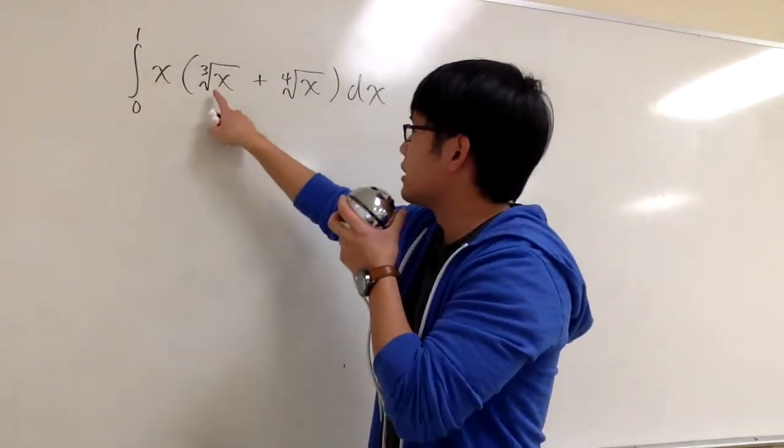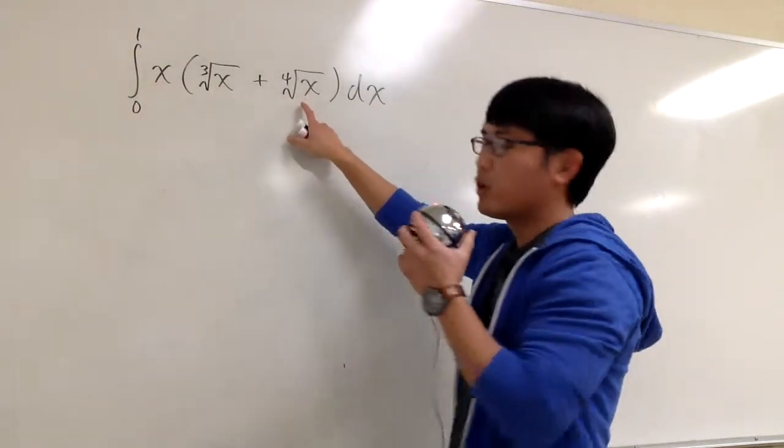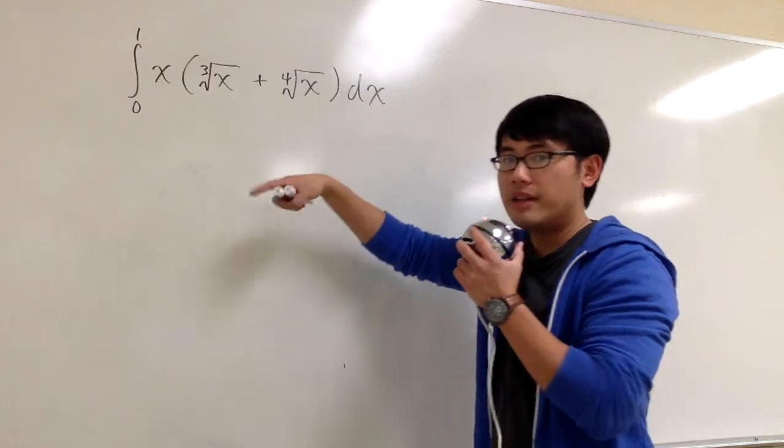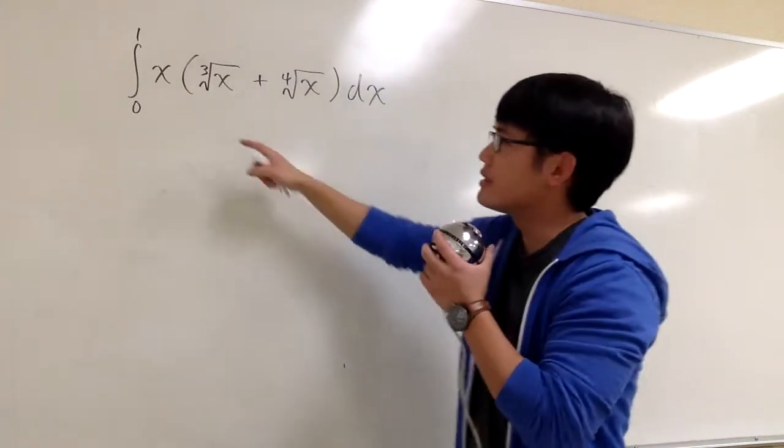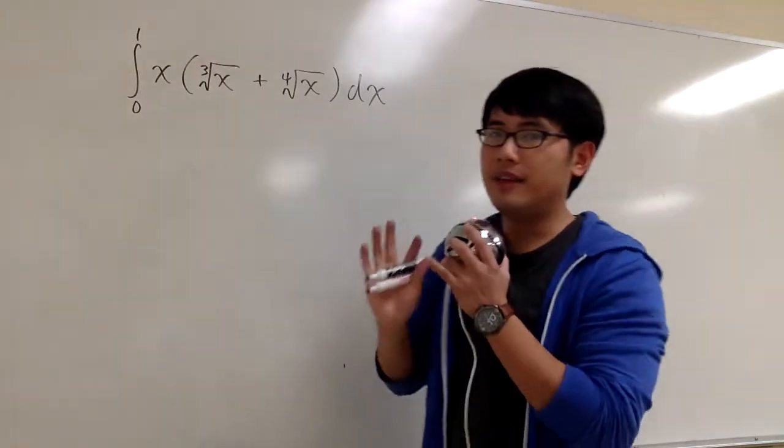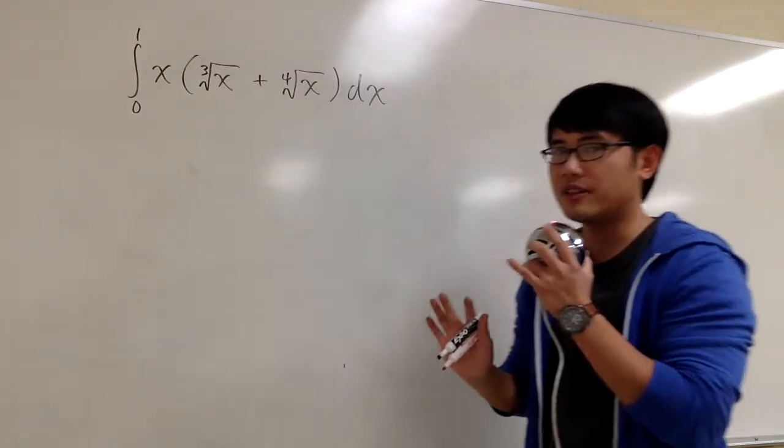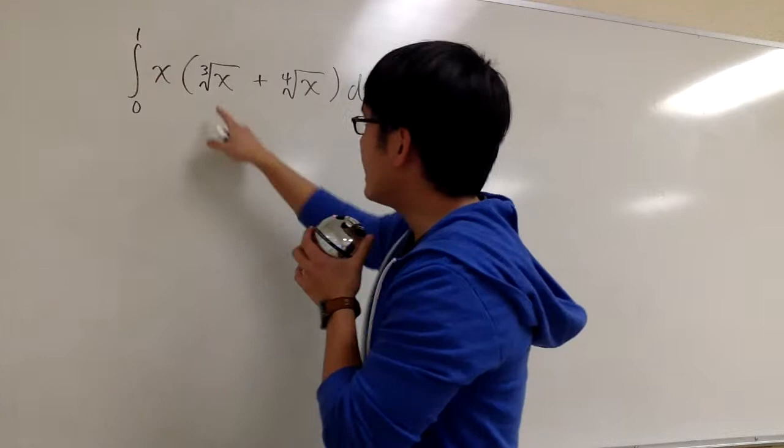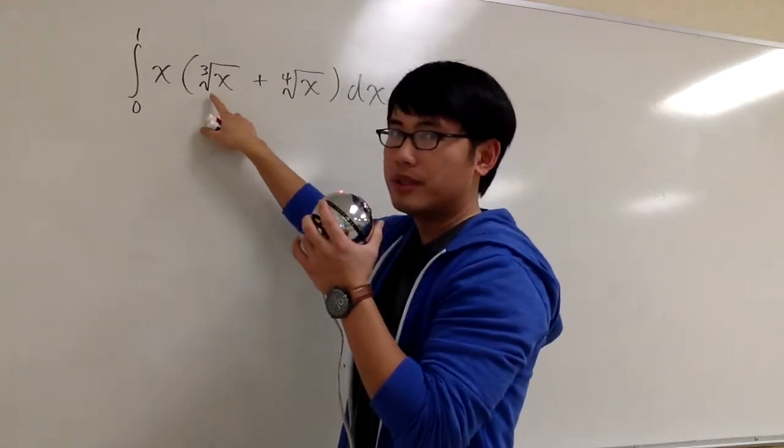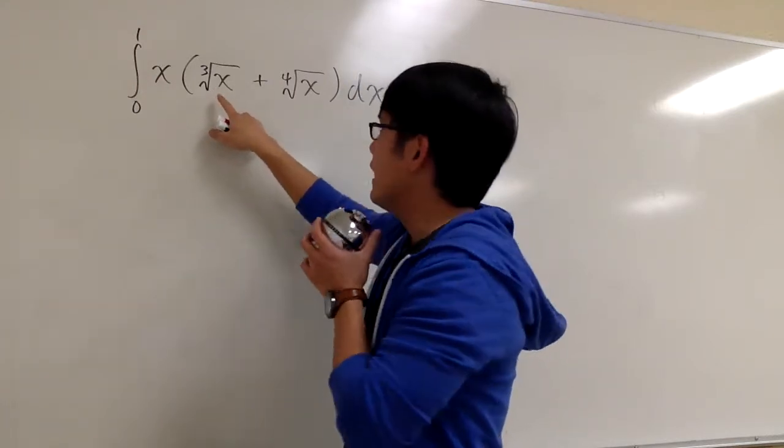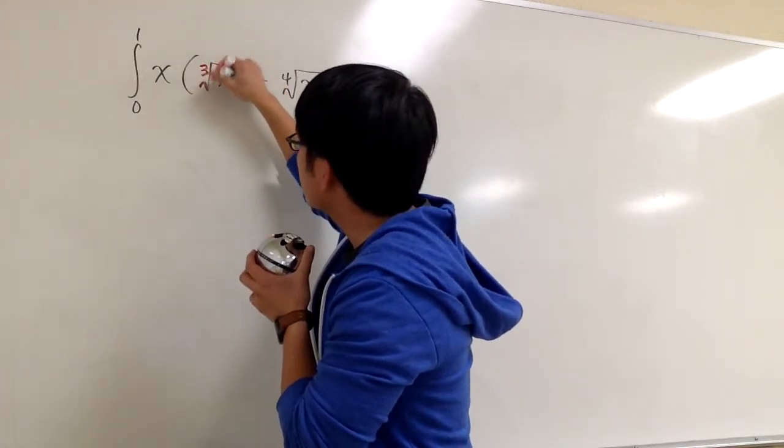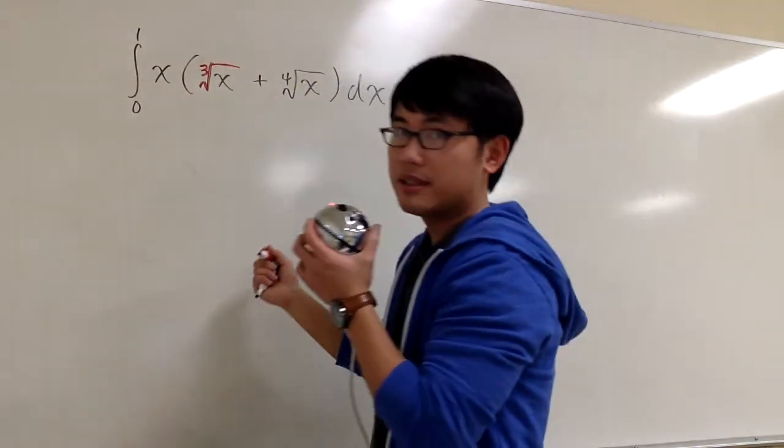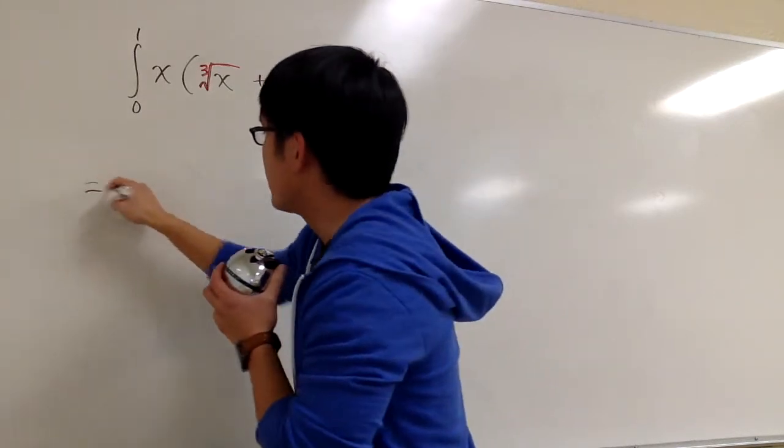Here we have x times the cube root of x plus the fourth root of x inside. We should distribute the x into the parentheses first, because we have to make sure that the powers are not going to affect each other. To do that, right here, what we should be doing is look at the cube root of x as x to the 1 third power. So this right here, the cube root of x, is just the same as x to the 1 third power. So let me write this down.